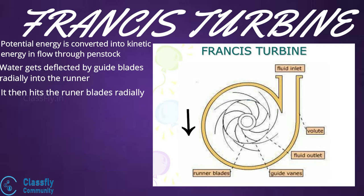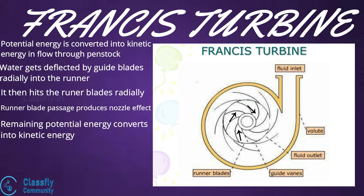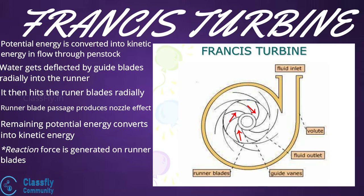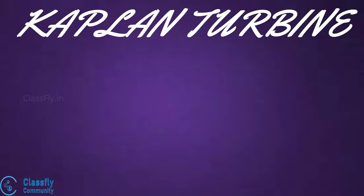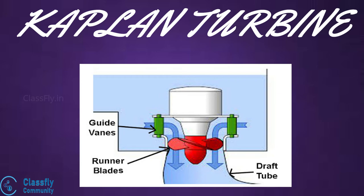During its flow over the runner blades, the passage between the blades acts like a nozzle, so the remaining part of the potential energy of water is also converted into kinetic energy. An impulse force is generated as the water leaves the blades, causing rotation of the blades and therefore rotation of the shaft, which can then be used to generate electricity.